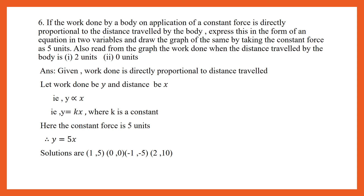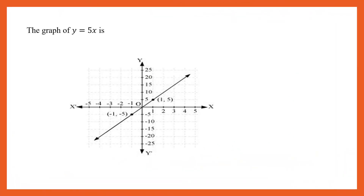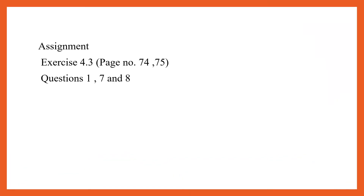Giving values for x, we can find the solutions as (1, 5), (0, 0), and (negative 1, negative 5). Plotting the points (1, 5), (negative 1, negative 5), and (0, 0), we can find the graph of the linear equation y equal to 5x. Based on these linear equations, finding solutions and plotting the points on the graph paper, you can do Exercise 4.3, page number 74 and 75, questions number 1, 7, and 8.